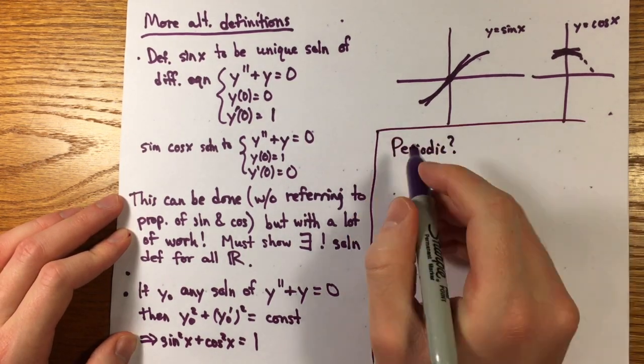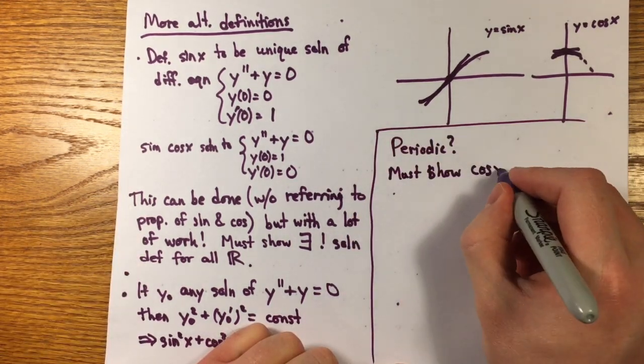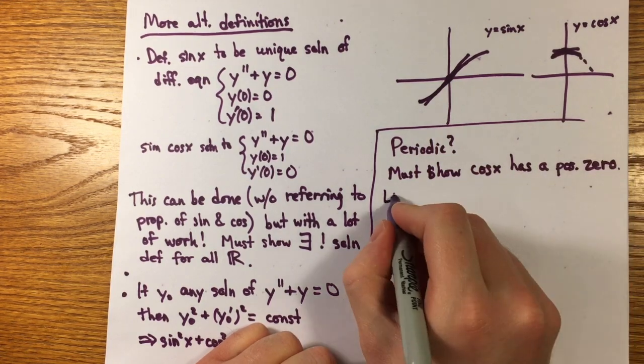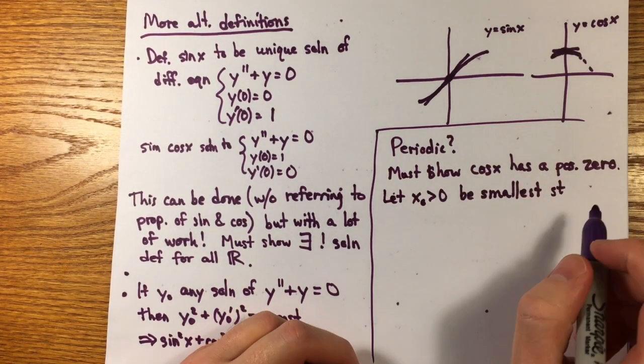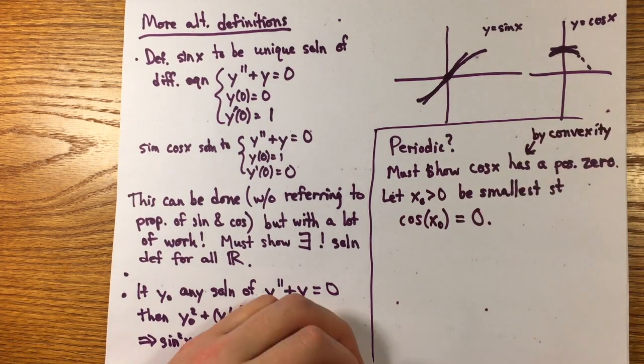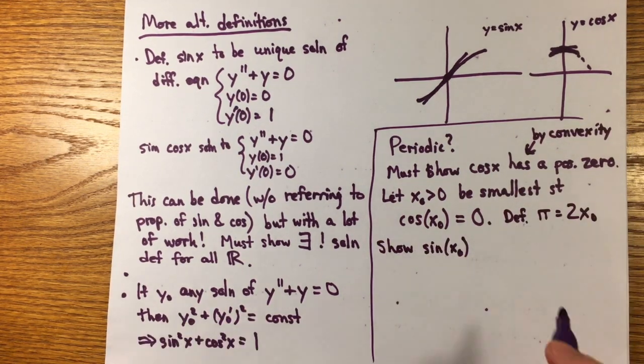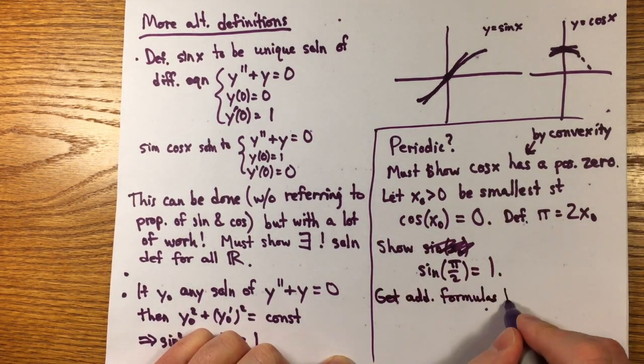One only recovers pi and the periodicity, though, by defining pi here as twice the first positive 0 of cosine. You have to use convexity or the sine of the second derivative to show that such a 0 of cosine must exist.